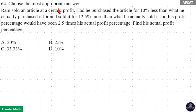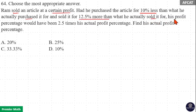Ram sold an article at a certain profit, but he purchased it for 10 percent less than what he actually purchased it for, and sold it for 12.5 percent more than what he actually sold it for. His profit percentage would have been 2.5 times his actual profit percentage. Find his actual profit percentage.